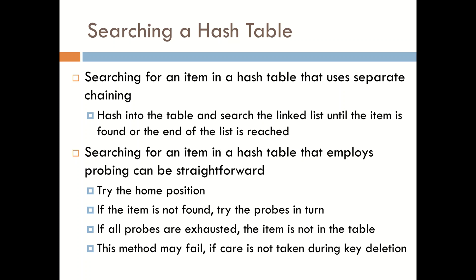Searching for an item in a hash table that uses open addressing and thus probing can be straightforward. First, we try the home position and if the item is not found, then we can try each of the probes in turn. And if all the probes are exhausted, then we know that the item is not in the table. This method, however, may fail if we're not careful as to how we remove items from a hash table.